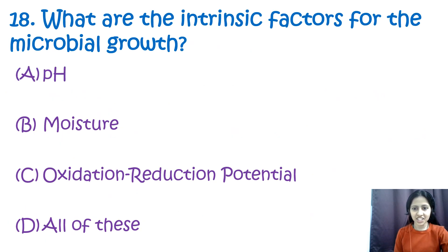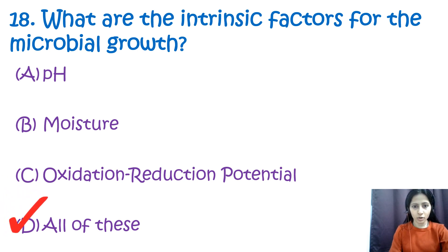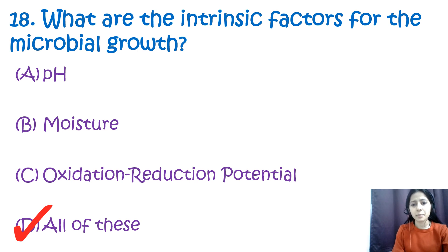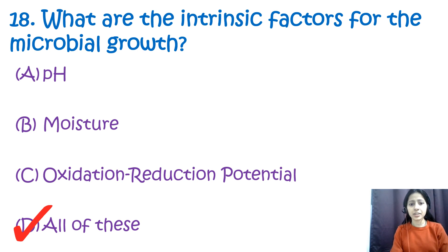Question number eighteen: what are the intrinsic factors for microbial growth? Option A: pH, option B: moisture, option C: oxidation-reduction potential, option D: all of these. The correct answer is option D — all of these. pH affects microbial growth by altering environmental acidity; moisture content provides suitable conditions for reproduction; and oxidation-reduction potential measures the tendency of a substance to gain or lose electrons, affecting the availability of oxygen in the environment.